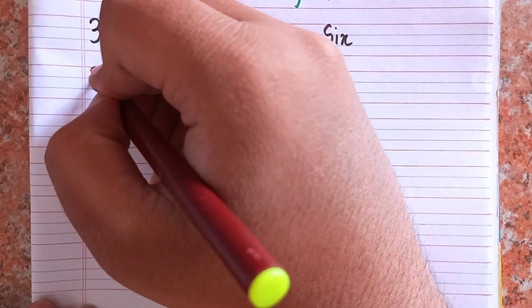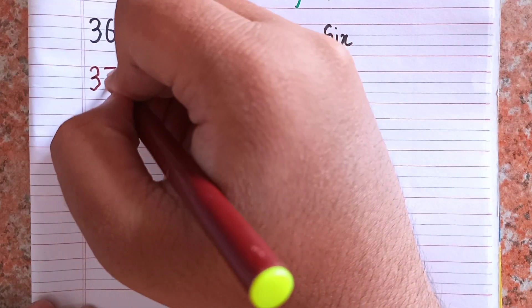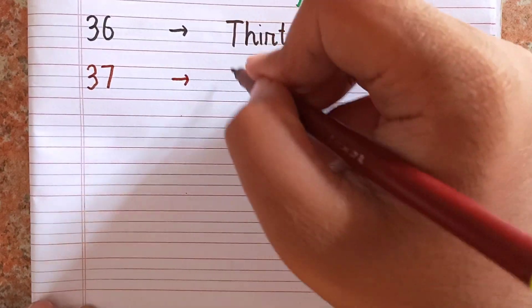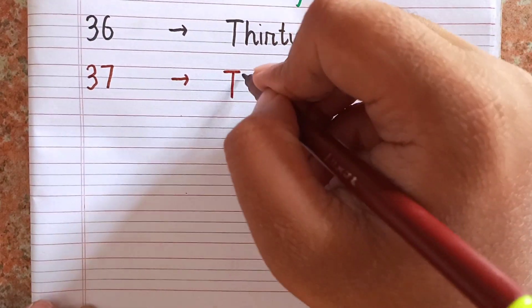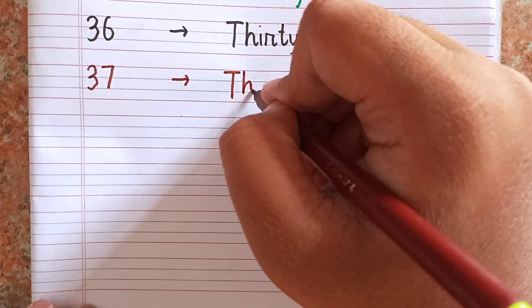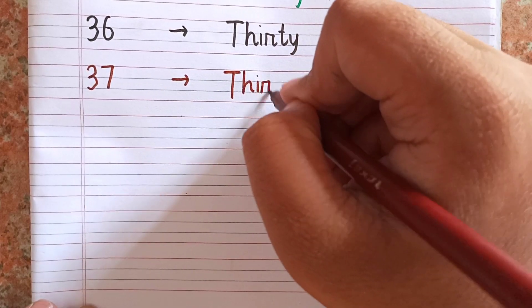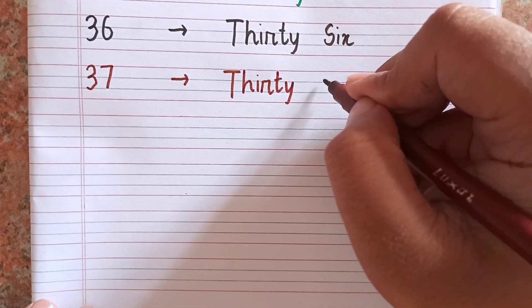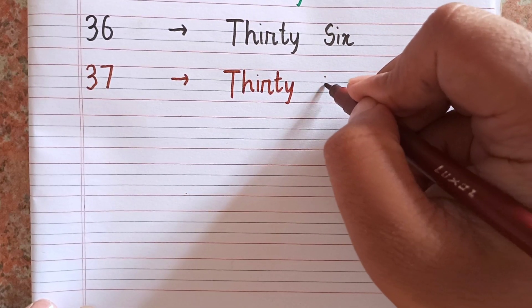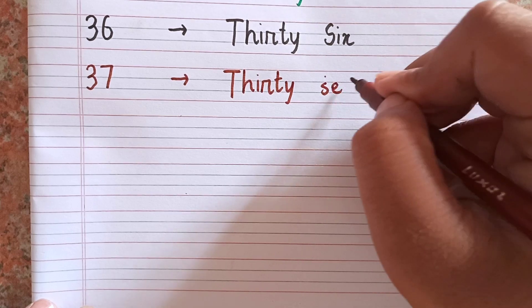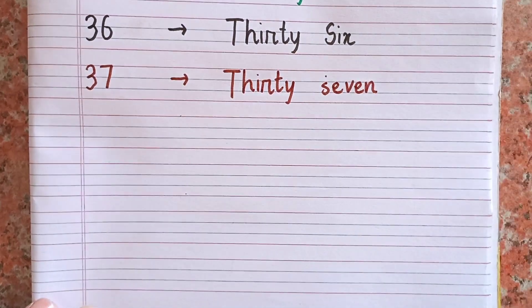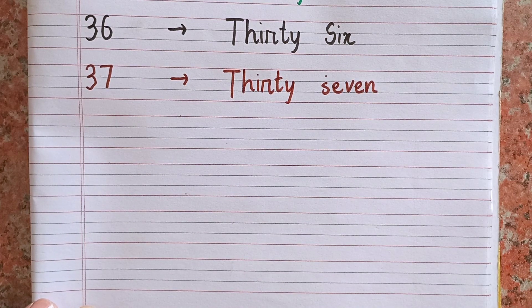After thirty-six, the next number is thirty-seven — 3-7. The spelling of thirty-seven is T-H-I-R-T-Y S-E-V-E-N. 37.